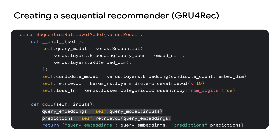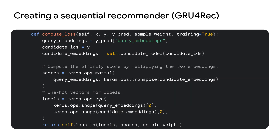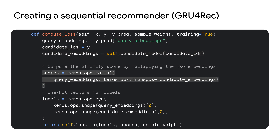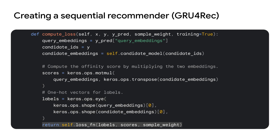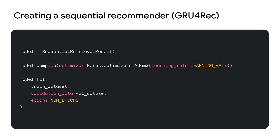In the call method, we'll feed the user query through the query tower and retrieve the recommendations. To train our retrieval model, we'll use the affinity score between the output of the query tower and the candidate tower. This will tell us how well they match. To do this, we'll override the compute_loss method. The output of the query tower is available through y_pred, which comes from the call method we created earlier. We also calculate the output of the candidate tower. We then compute the affinity scores by multiplying these two outputs. Our goal is to get these affinity scores as close as possible to a diagonal matrix, representing perfect matches. The categorical cross-entropy loss is used to quantify how far we are from that perfect match. With the model defined and the loss function in place, we can now easily train it using Model.fit with our dataset of user-item interactions.